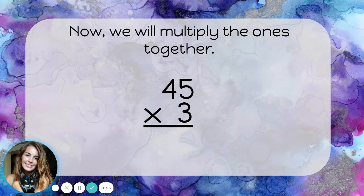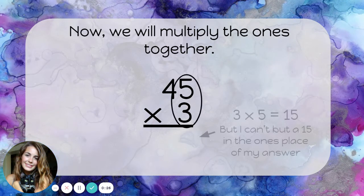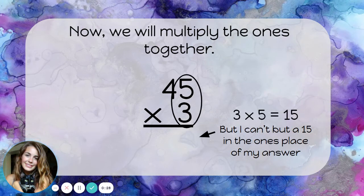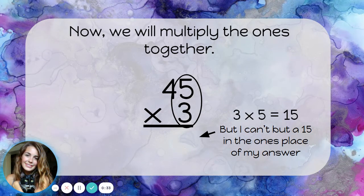Now, we'll multiply the ones together. 3 times 5 is 15, but I can't put a 15 in the ones place of my answer. Remember that each place in a number only holds one digit.